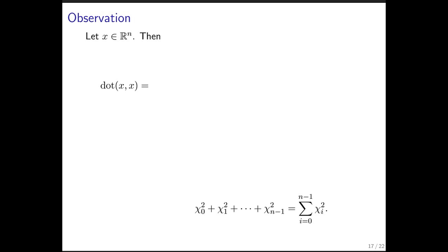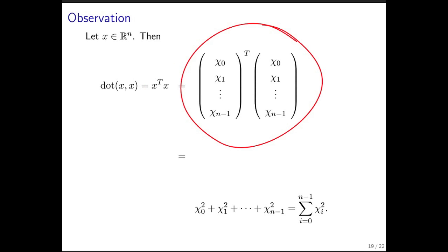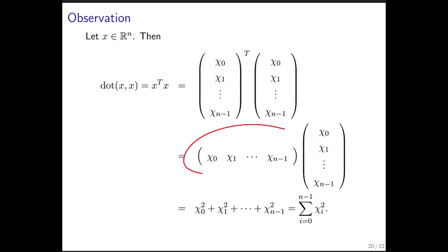Let's start with the dot product of a vector with itself. This is the sum of the squares of the components. We can write this as x transpose x, exposing the components, or as the row vector x times the column vector x.